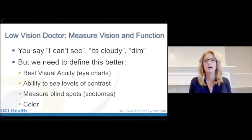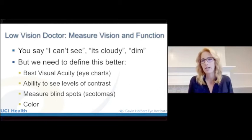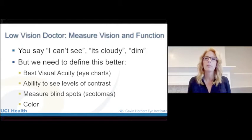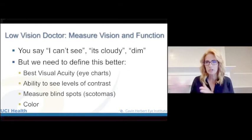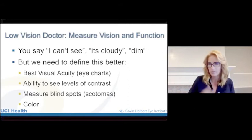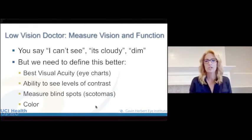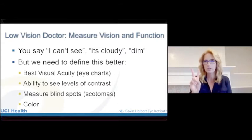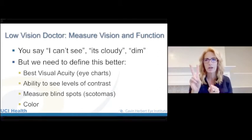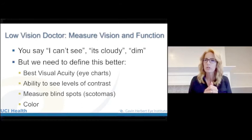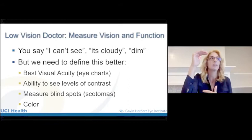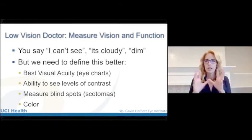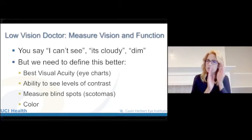We'll measure vision using eye charts — I have charts that go up to very large letters, including a large number seven. I don't do 'count fingers' as some doctors do when their charts don't go high enough. We also assess where you can see — out to the side, by turning your head — to find that best sliver or area of vision. I also use a trial frame to check lenses. Sometimes I only check the better eye, because if one eye is much worse, the brain has already naturally suppressed it.